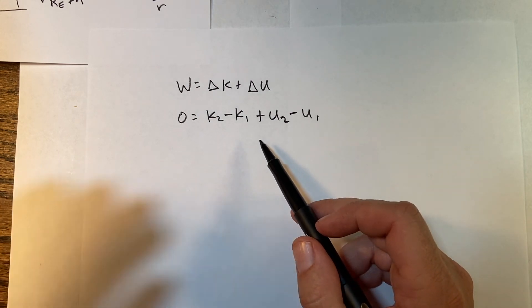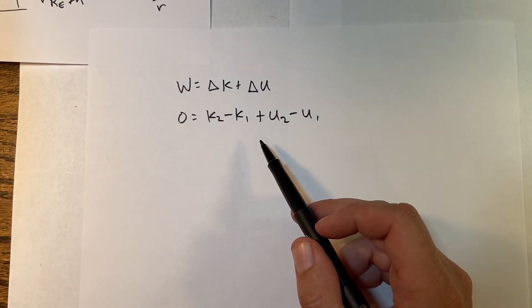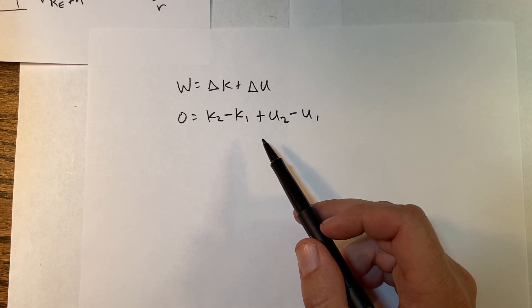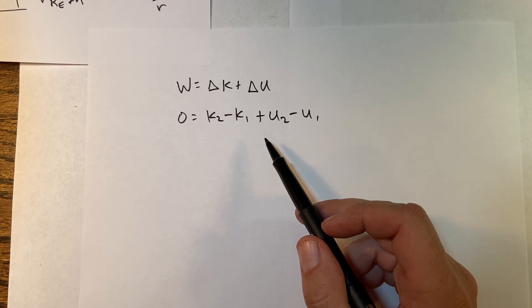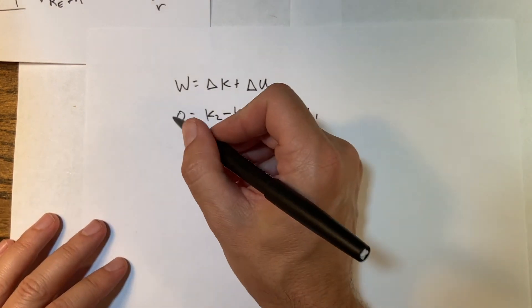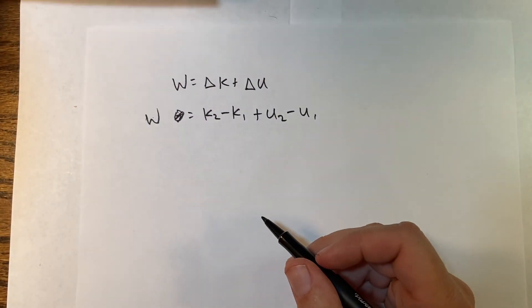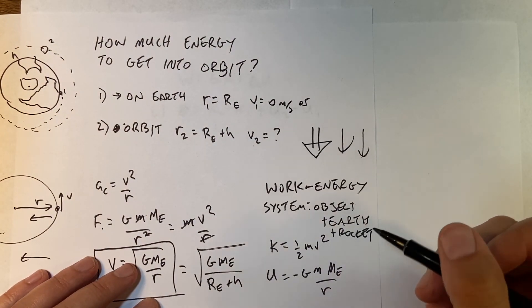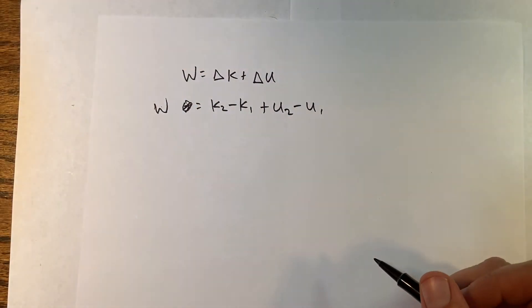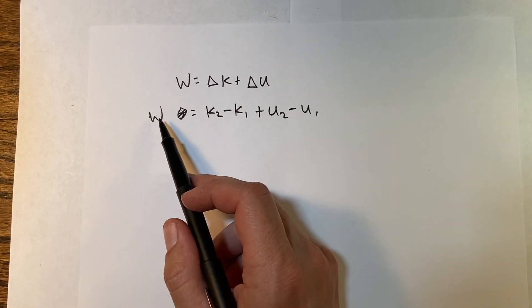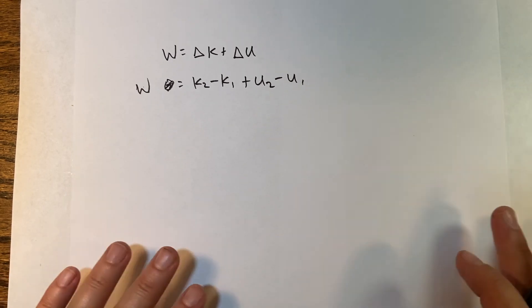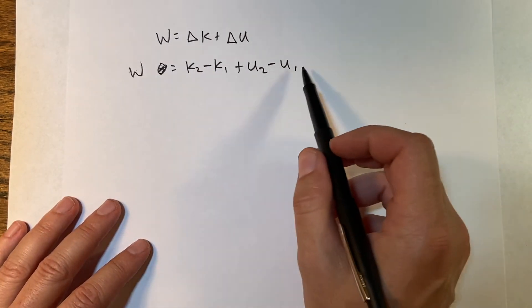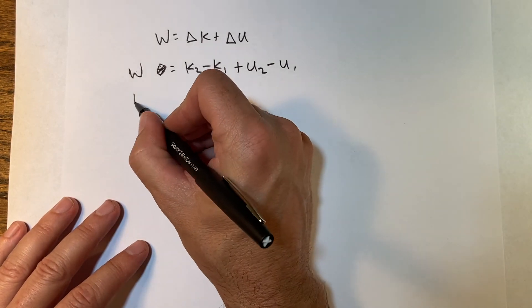What am I trying to solve for? How much energy. There is something else in the system, the rocket or fuel source. That is going to do work on the system. So there's going to be work on the system, and that's what we're trying to find. This is not going to be equal to zero.